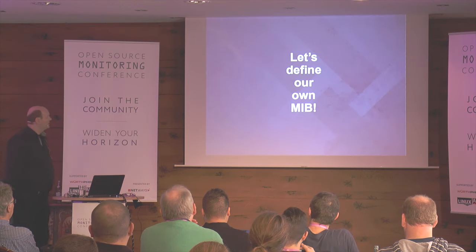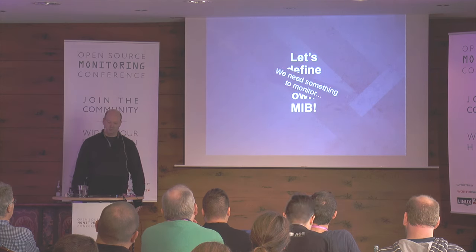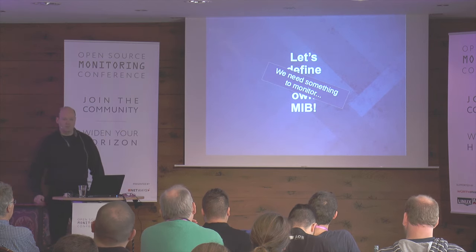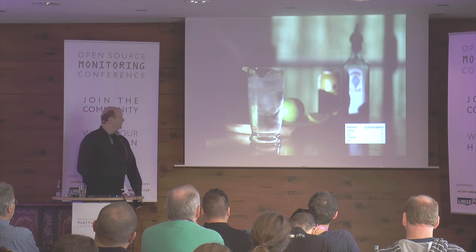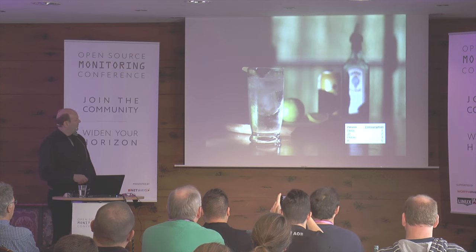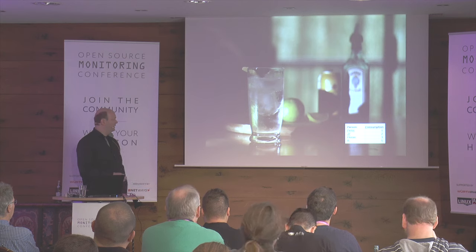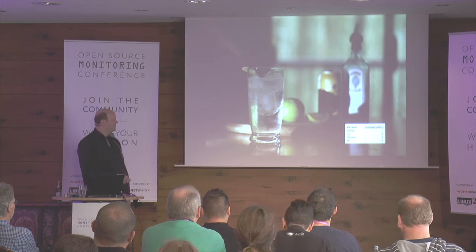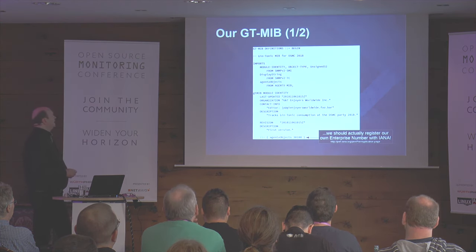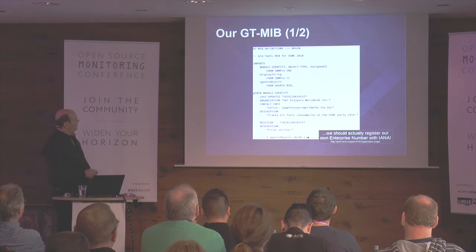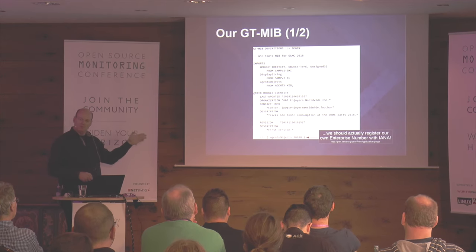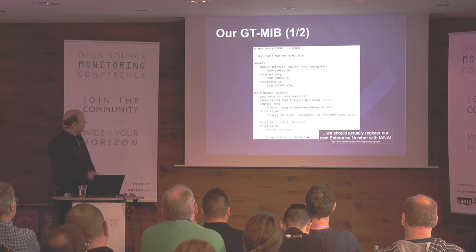Enough diving — let's define our own MIB. If we want to define our own MIB, we obviously need something to monitor. This is OSMC, so what could be a typical thing here to monitor? Here's a table I want to implement: suppose you're a barkeeper tracking consumption — there's Peter, GP, Florian, and so on. Our MIB has the definitions, BEGIN at the start and END at the end. It has a comment, an import section reduced to the minimum we need, and a module-identity block with last-updated, organization, and revision information.